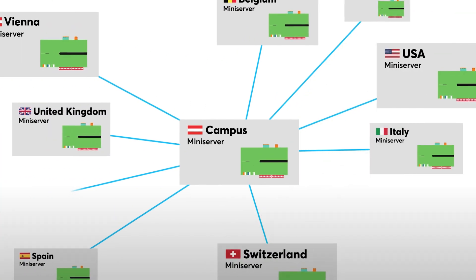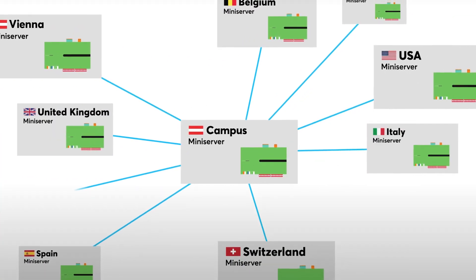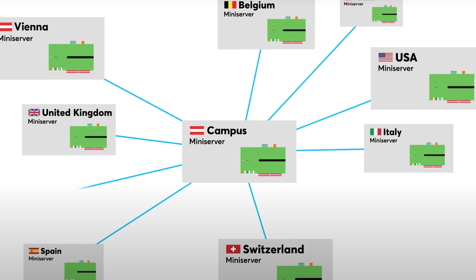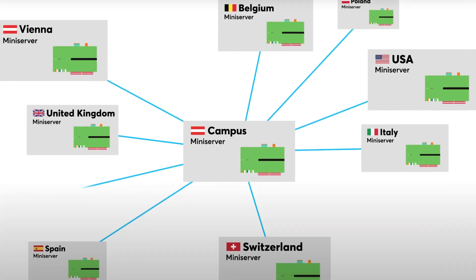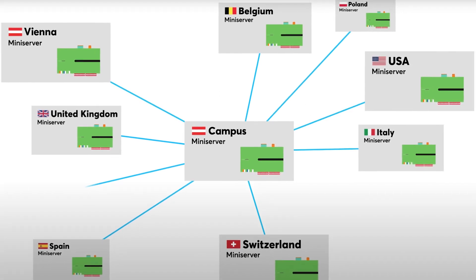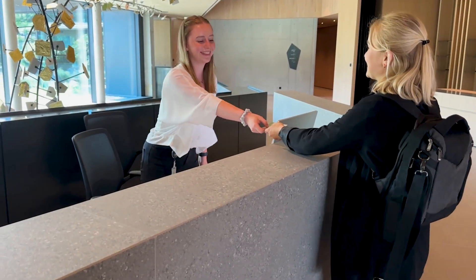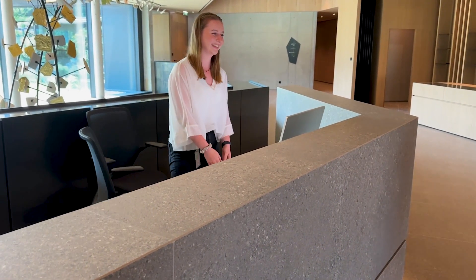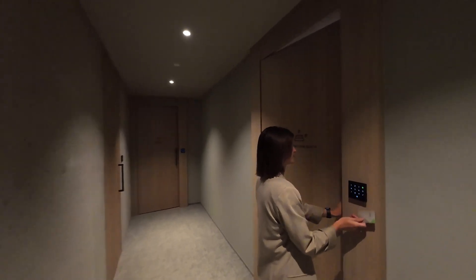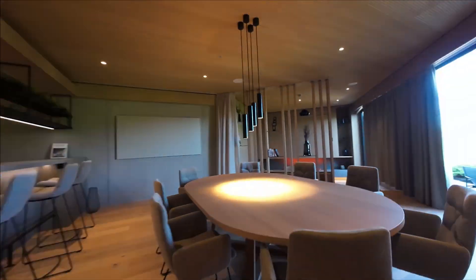Trusts enable users, their credentials, and access permissions to be shared across different mini-servers. Switching between these mini-servers becomes even more convenient with the new Config, as you no longer need to enter a password to switch. The prerequisite is that the respective user also has authorization for visualization in the Loxone app of the respective Trust mini-server. One use case here is at the Loxone campus, for example, where you can access the mini-servers in the hotel rooms even faster and easier from the reception.